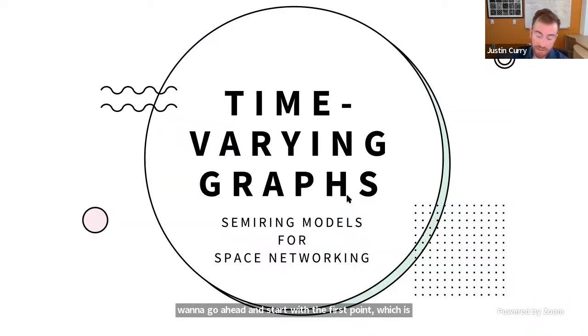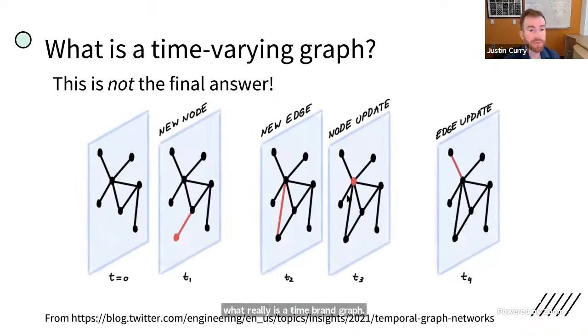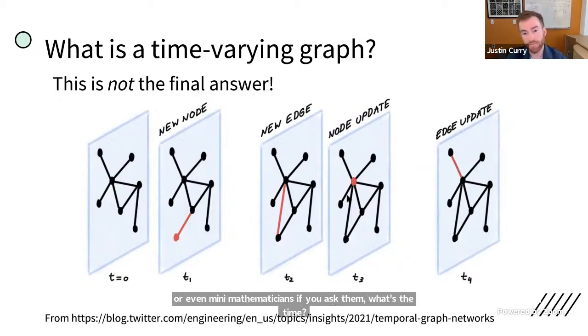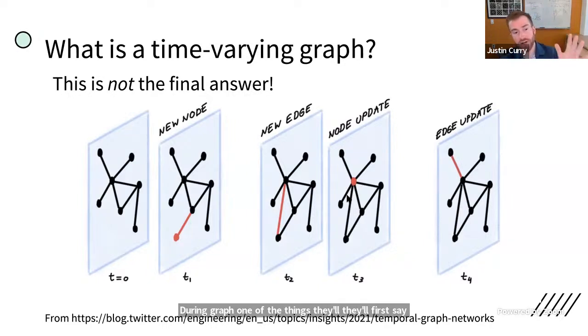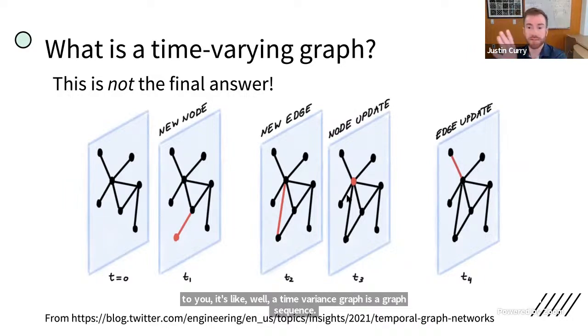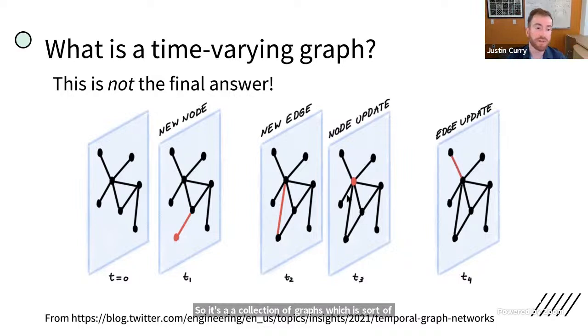All right. And so with these three sort of signposts, I want to go ahead and start with the first point, which is what really is a time-varying graph? Okay. So if you talk to an engineer at Twitter or even many mathematicians, if you ask them what's a time-varying graph, one of the things they'll first say to you is like, well, a time-varying graph is a graph sequence. So it's a collection of graphs, which is sort of indexed by some counter variable. We can think of that index as being like the timestamp or snapshot at which you're viewing a network, but very often you can just literally think of it as something that's indexed by the natural numbers.